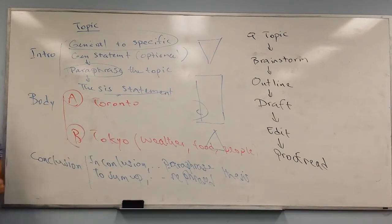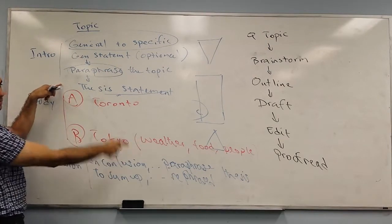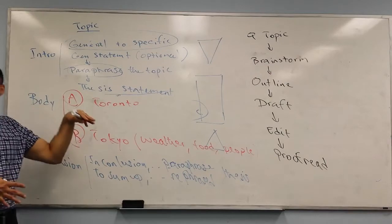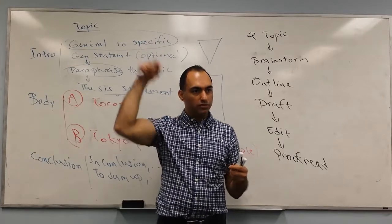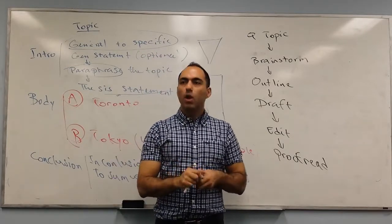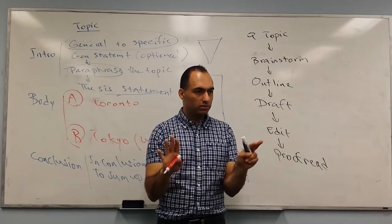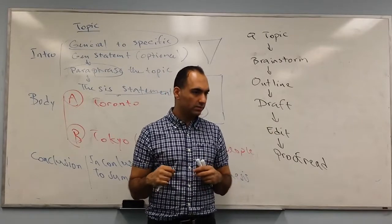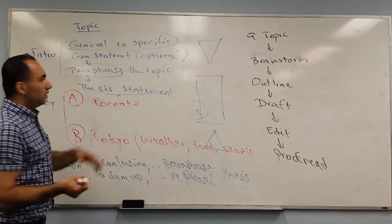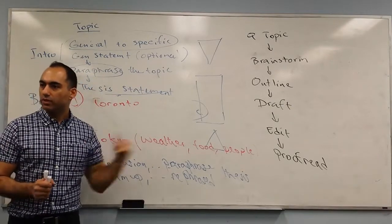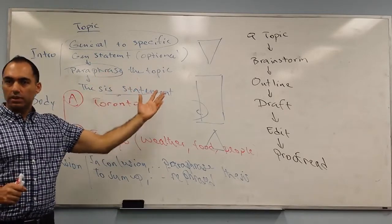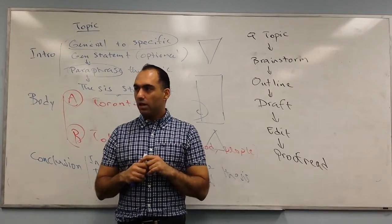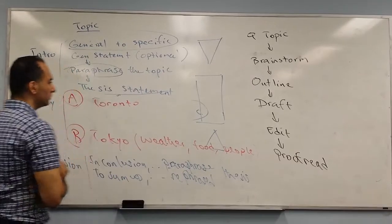Or I can say weather Toronto-Tokyo, food Toronto-Tokyo, people Toronto-Tokyo. In that case I'll have three paragraphs in the body. In the first case my entire essay is four paragraphs, in this case five paragraphs. We'll talk more about this in the future. I'm just giving you the general outline right now. Every paragraph has one main idea.